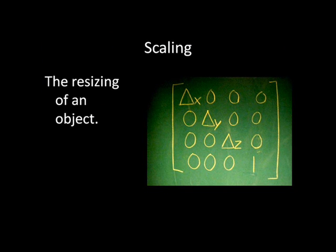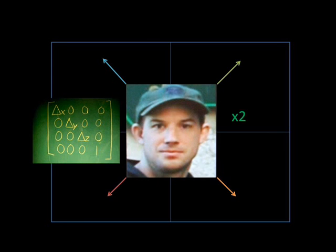Lastly we have scaling, which is the resizing of an object. So here is our object again. Say we want to scale it up to 2 times its original size; we can apply this matrix where delta x, delta y, and delta z are equal to 2.